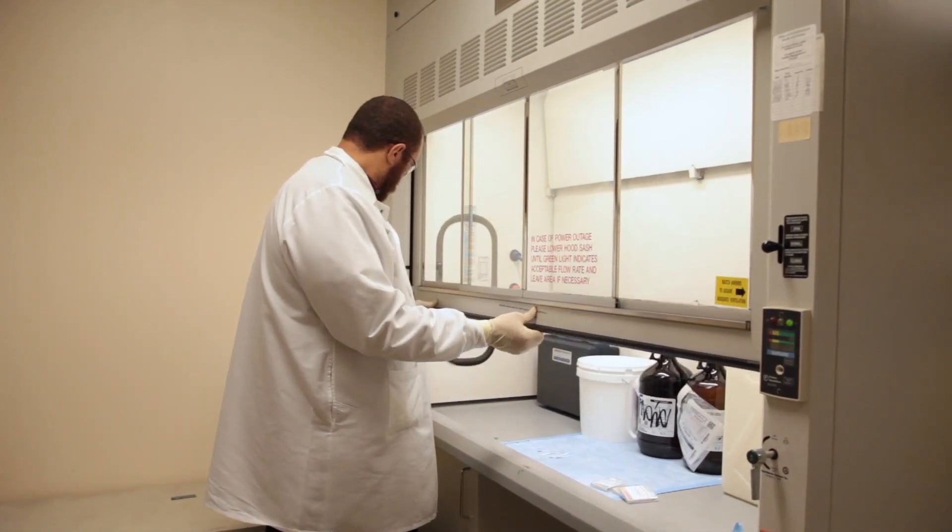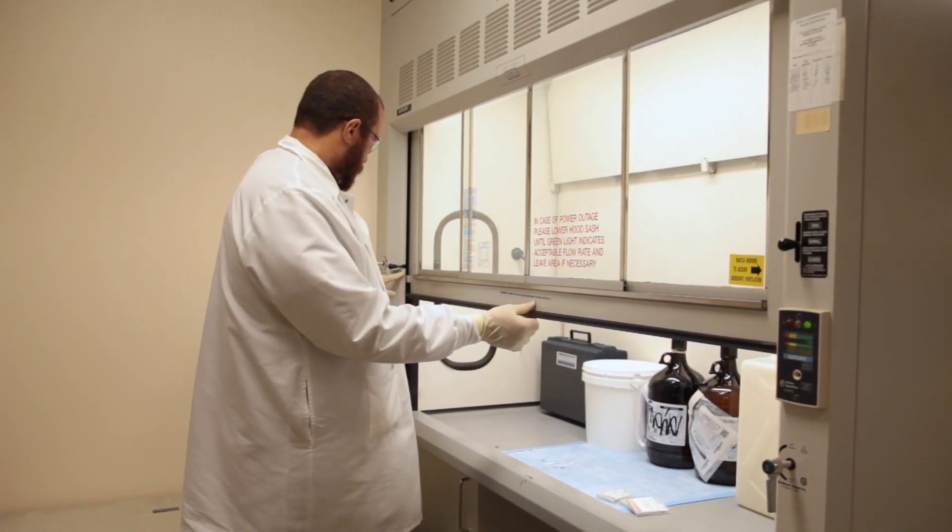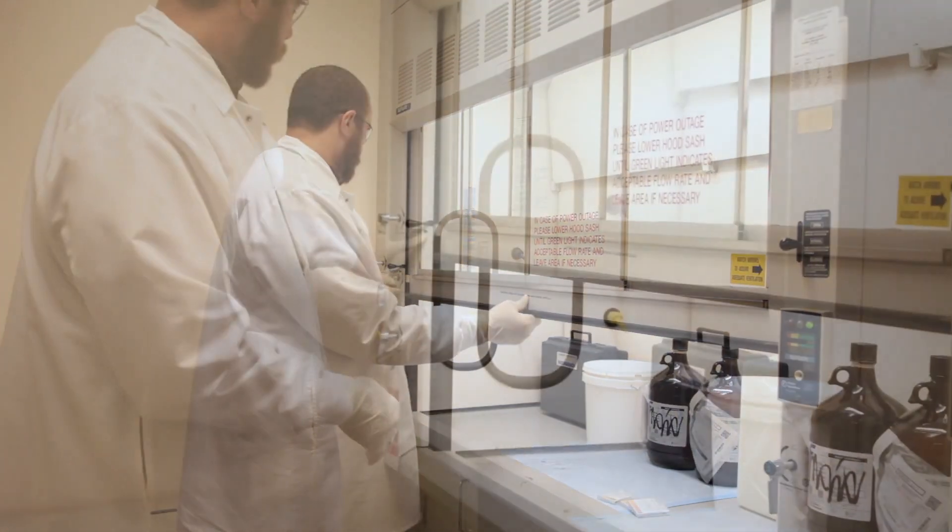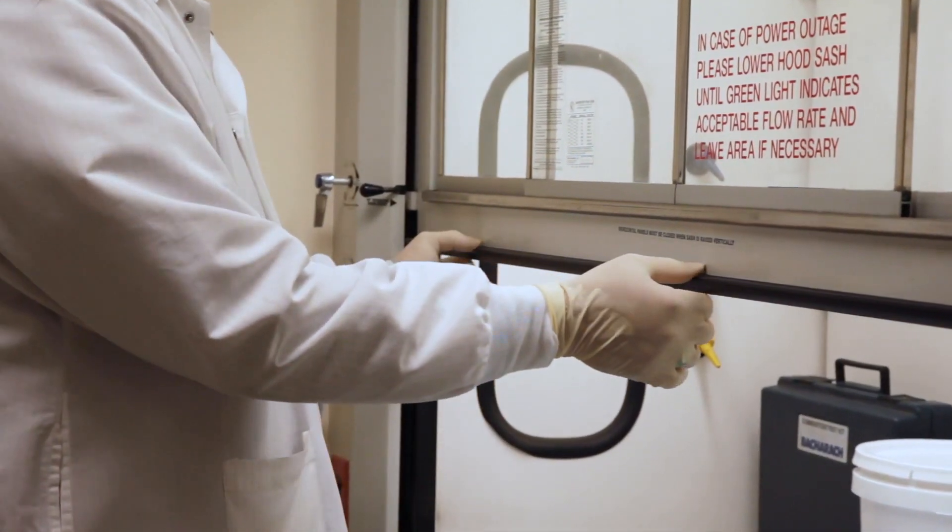The proper working height of the sash will be noted on the front of the hood. When using a fume hood, ensure the sash is not raised above this position to allow for proper airflow.